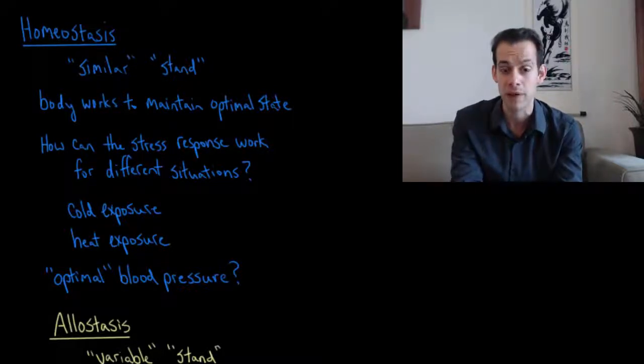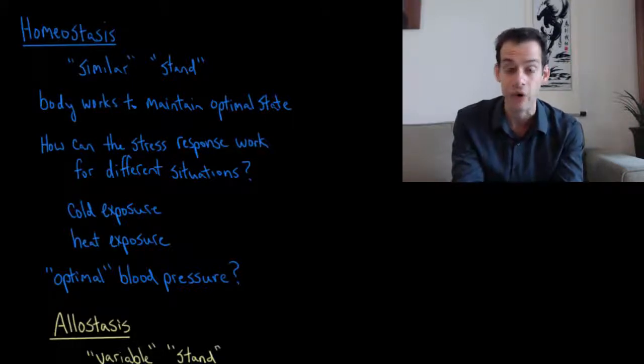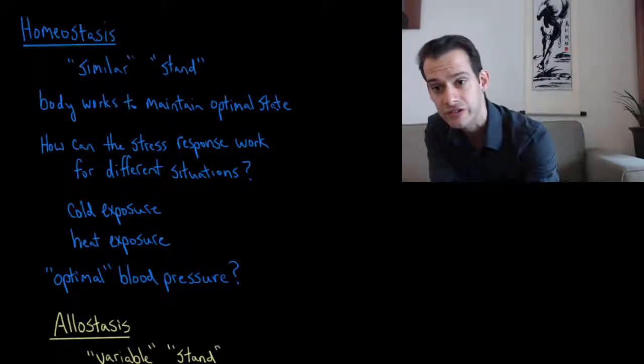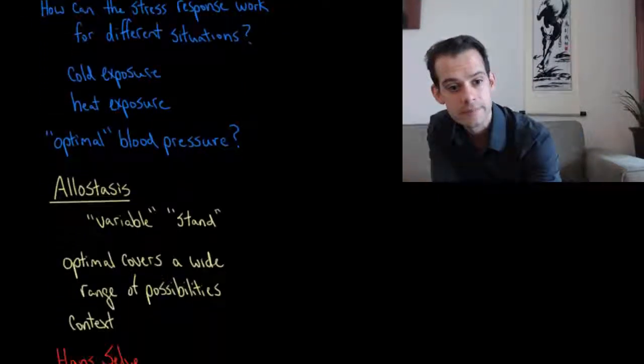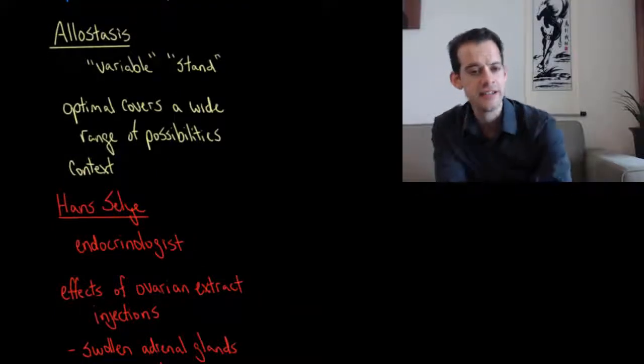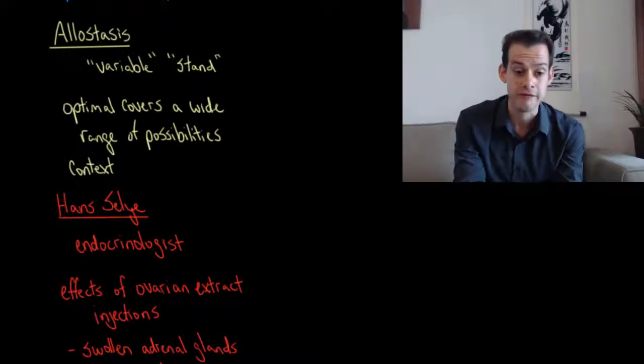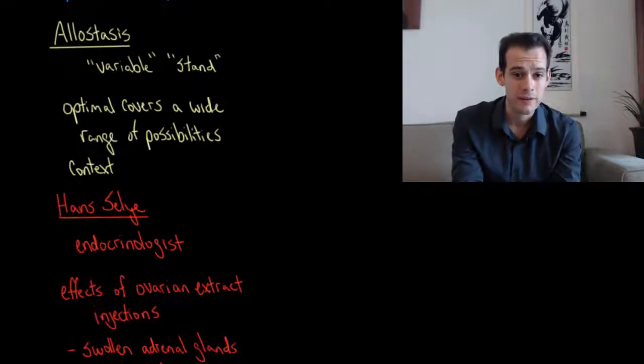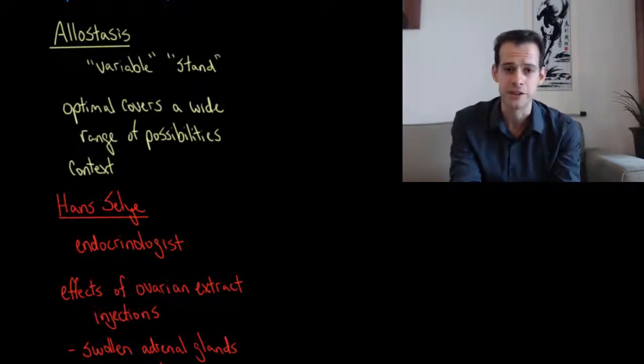What exactly does that mean? If we think about something like blood pressure, is there really an optimal blood pressure for all situations at all times? This brings us to the idea of allostasis. This is a variation on the idea of homeostasis. This is the idea, and it comes from the Greek for variable stand.